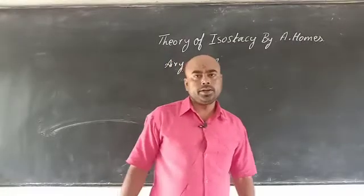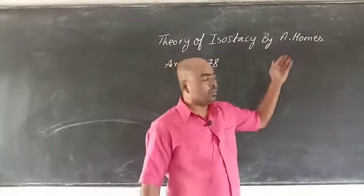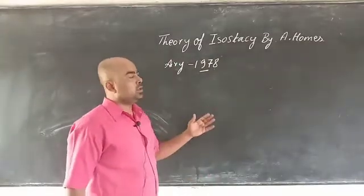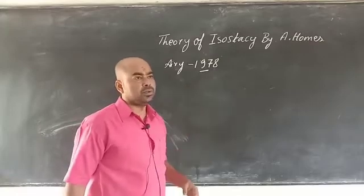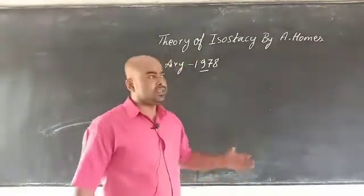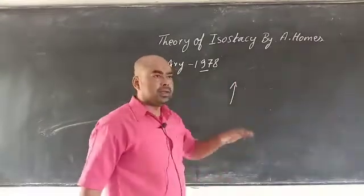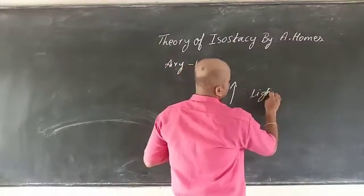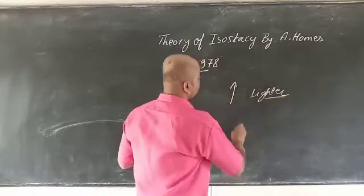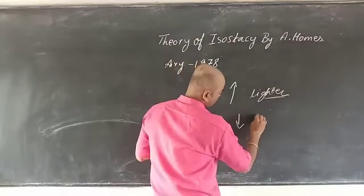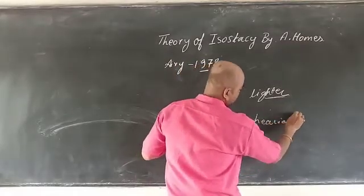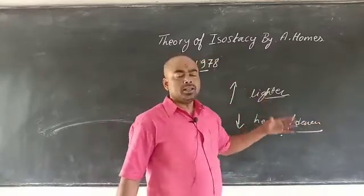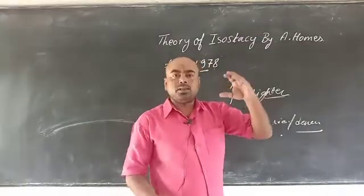Another theory related to isostasy is by Arthur Holmes, who supported the Airy theory developed in 1878. According to this theory, the higher the relief feature of the earth, the lighter the material is. And the lower the height of the relief feature, the heavier or denser the material is. So mountains are made of lighter material and are of big height to adjust themselves.